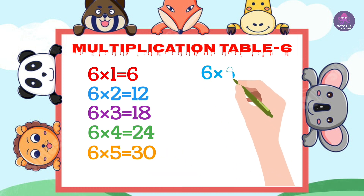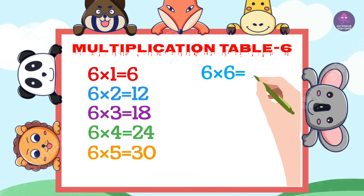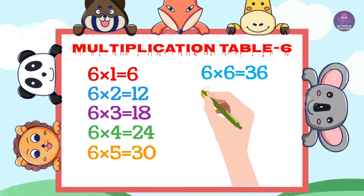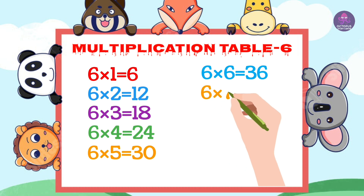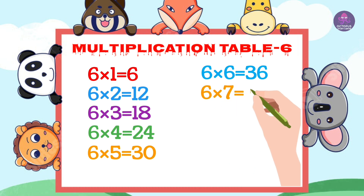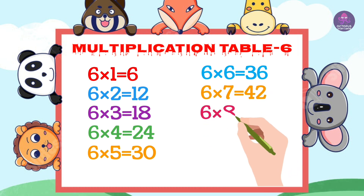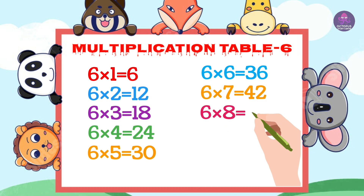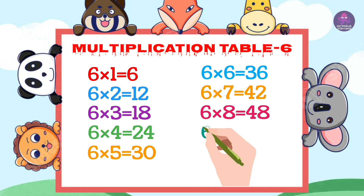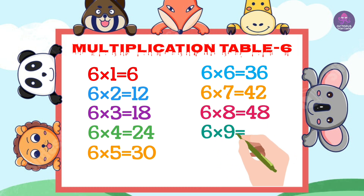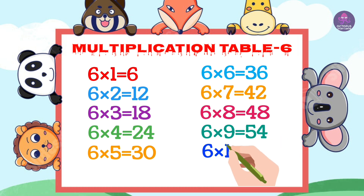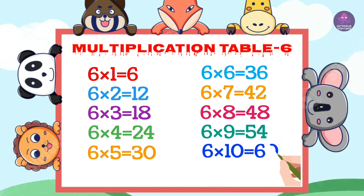6 6s are 36, 6 7s are 42, 6 8s are 48, 6 9s are 54, 6 10s are 60.